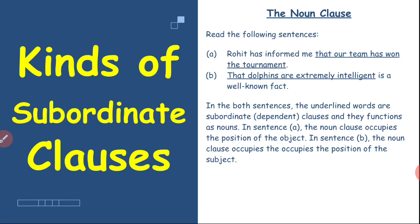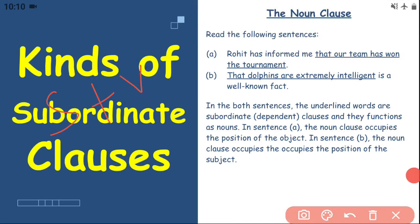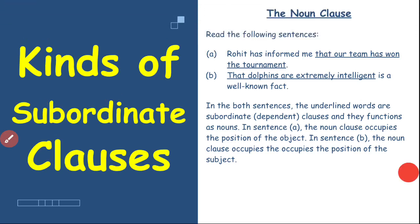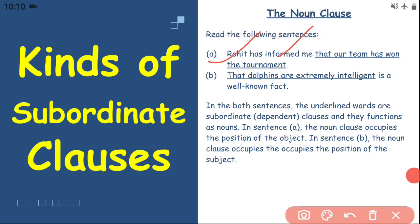These underlined words are subordinate or dependent clauses because they function as nouns. In sentence A, the noun clause occupies the position of the object. As we have learned, a sentence has a subject, a verb, and an object. In this sentence, 'Rohit' is the subject, 'has informed' is the verb, and the underlined dependent clause has taken the place of the object.